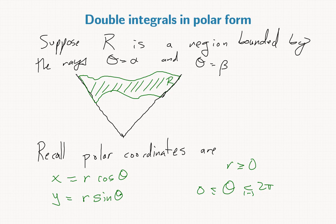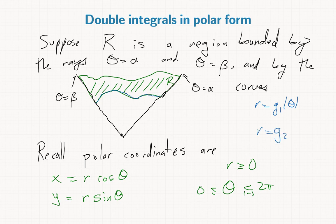Each of these rays - this ray is theta equals alpha, and this ray is theta equals beta. And by the curves r equals g1 of theta, that'll be our bottom curve here, and r equals g2 of theta, which is our upper curve.